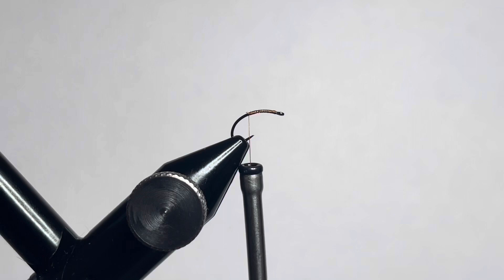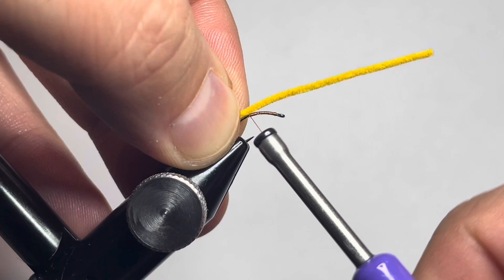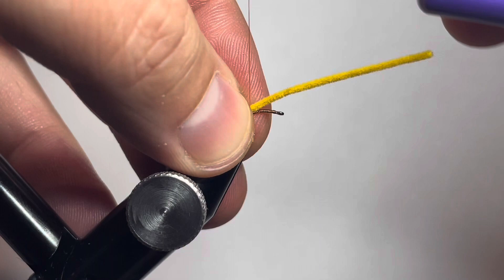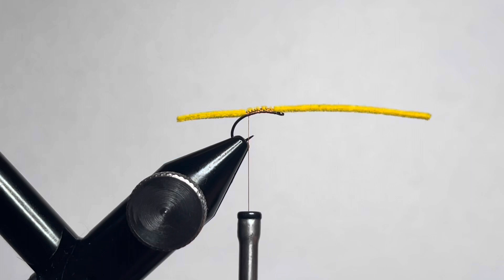Let's go ahead and snip off our tag end. We're gonna grab some Semperfly suede chenille in brown olive and measure that out to be one hook length. Tie that back in towards the middle of the curve on this clink hammer hook and secure that in place. Advance our thread up and leave about an eye length of material not tied down behind the eye of the hook, then work our way back.